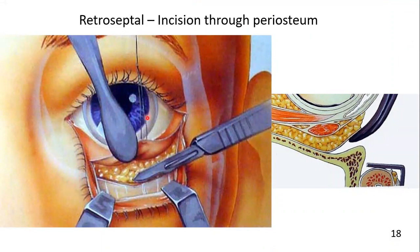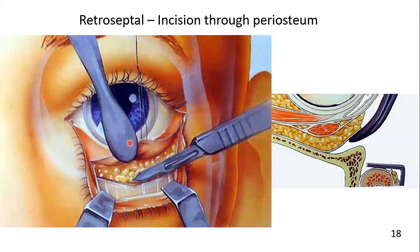The bony surfaces are exposed to the desired extent. The periosteum or periorbita is incised and dissected over the anterior maxilla or into the orbital cavity in the usual fashion. Here you can see an incision through the periosteum. A traction suture is placed through the cut end of the conjunctiva to redirect the tissue and maintain the position of the corneal shield. Small retractors are placed so that the lower lid is retracted to the level of the inferior surface of the infraorbital rim.